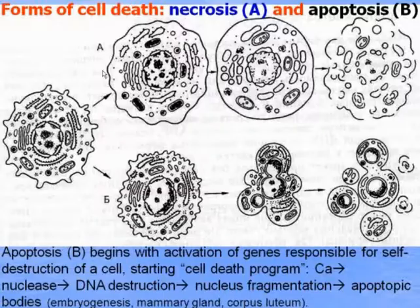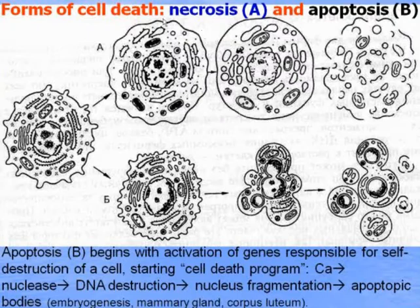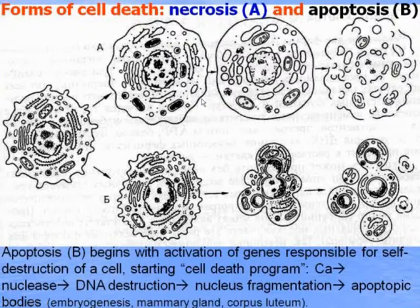Forms of cell death: necrosis and apoptosis. Necrosis occurs when cells are under unfavorable environmental conditions — physical and chemical effects. The membranes change, organelles become defective, intracellular damages accumulate, and the cell is not able to repair itself. Chromosomal defects accumulate, the nucleus cannot regulate the repair of structures, and the cell dies, is destroyed, and is phagocytosed by macrophages and disappears.